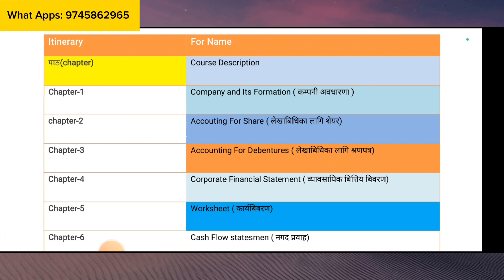Chapter 2 is Accounting for Share. Accounting for Share means you have 10 marks questions. In the 10 marks questions, you have 5 marks compulsory and 5 marks for students. That means you have the issue of share for cash.